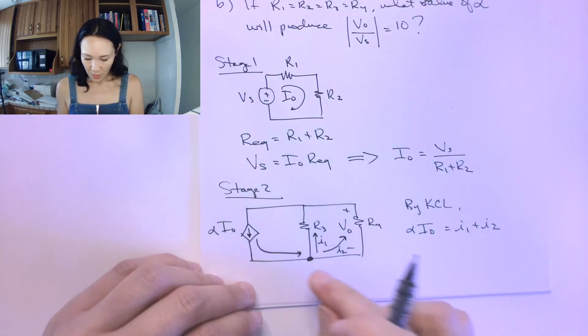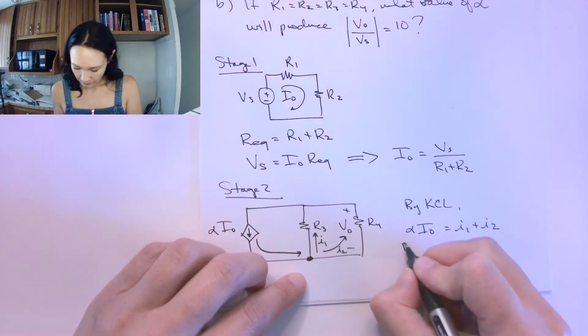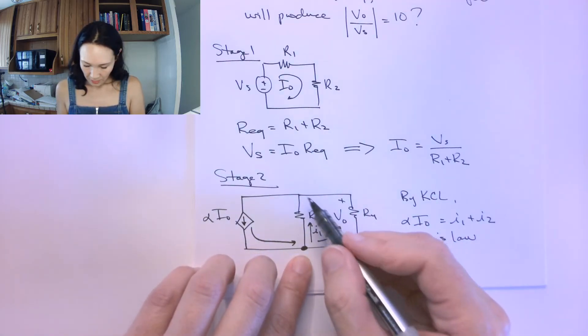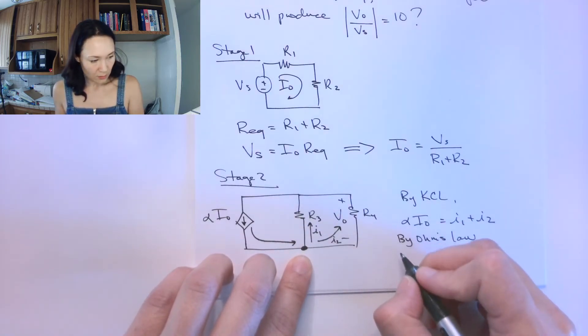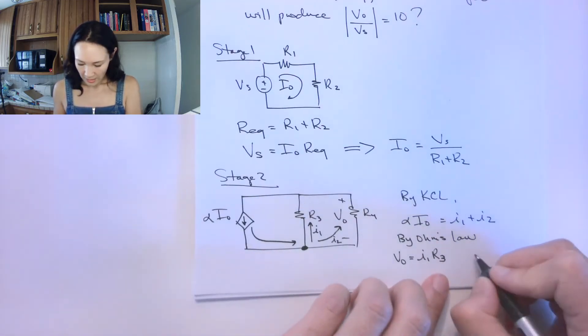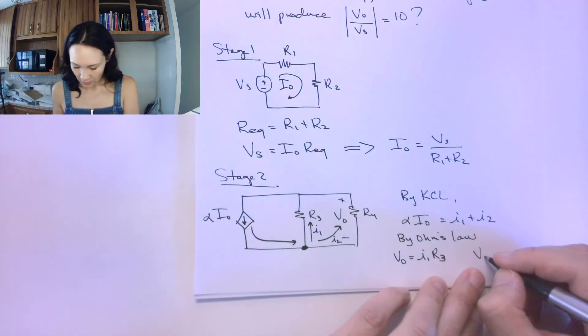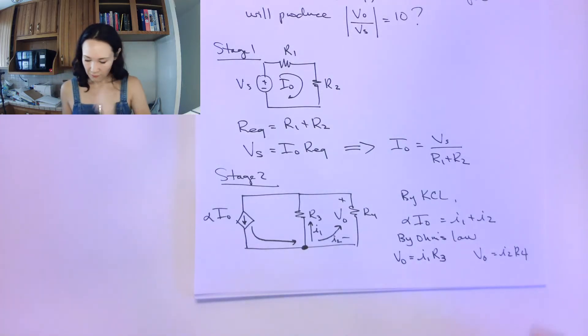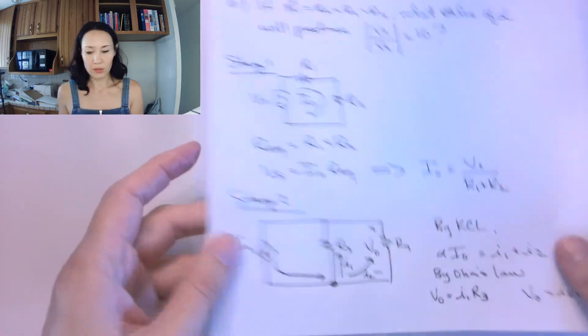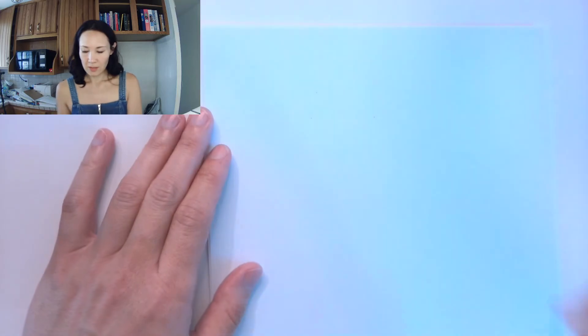Now, if we apply Ohm's law at each one of these branches, we know that the voltage drop across here is V0. So V0 equals I1 going through R3, and we know that the voltage drop across R4 is also V0, so V0 equals I2 times R4. Now what we can do is, if I solve both of these equations for I1 and I2, then I can substitute into this one. And now I have a function with I0s and V0s in them, and that will get me closer to the expression I was asked for at the beginning.